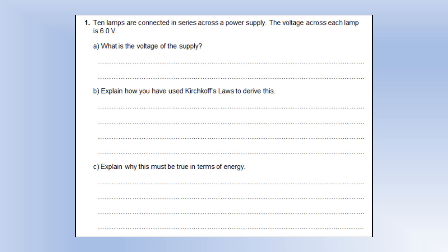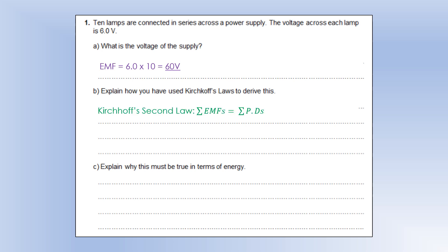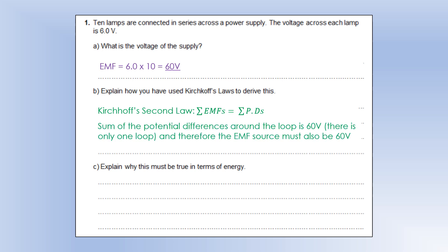Moving on: 10 lamps are connected in series across a power supply. The voltage across each lamp is 6 volts — what is the voltage of the supply? It's going to be 60 volts, so 6 times 10. Kirchhoff's second law says the sum of the EMFs equals the sum of the potential differences in a closed loop. The sum of the potential differences is 60, so the EMF source must also be 60 volts.